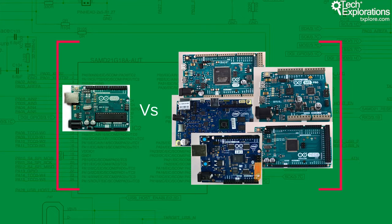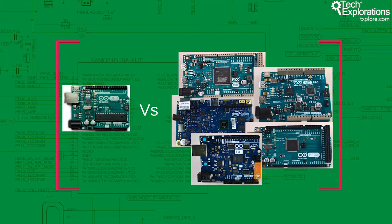Based on hardware that features 32-bit processing cores, more storage, faster processing speeds, more communication options, and more input-outputs, to name a few, the Arduinos that I discuss in this course open up a host of new possibilities in making things when compared to the Uno.